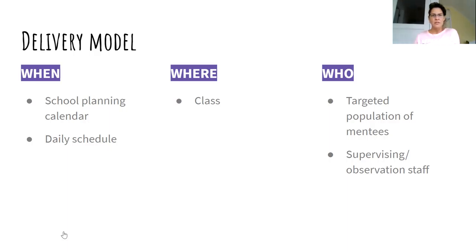After scheduling, think about where this will happen — in a homeroom setting or in a content class. Then think about who your targeted population of mentees is: freshmen, or freshmen and sophomores? Also think about who will be supervising or observing those MVP lessons, who will be in the classroom to ensure protocols are followed and classroom management basics are maintained. Staff are not there to lead the lesson — simply to observe — but you want an adult in the room who can help.